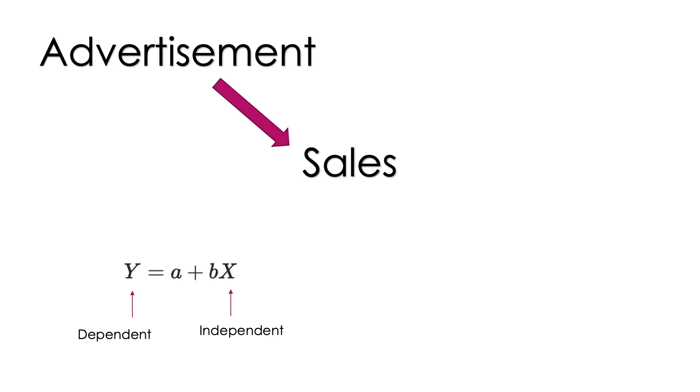So here in this equation, y is called dependent variable. In our case it is sales. And x is called independent, which is in our case the dollar spent in advertisement. Y is called dependent because y is dependent on x. If you change x, y will change. It has no other choice. So that is why y is called dependent.